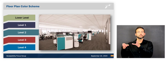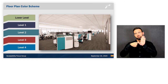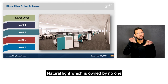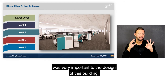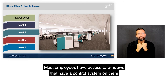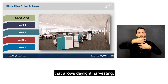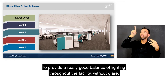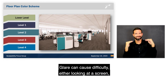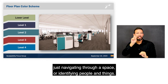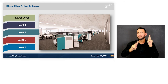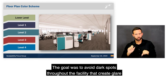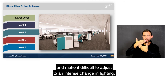Level two's accent color on furniture ties back to the Texas region and color scheme of that floor. Natural light was very important to the design — most employees have access to windows with a daylight harvesting control system. If it is bright and sunny outside, interior lights dim to provide a good balance of lighting throughout the facility without glare. Glare can cause difficulty looking at a screen, navigating a space, or identifying people and things. The goal was to avoid dark spots and intense lighting changes throughout the facility.